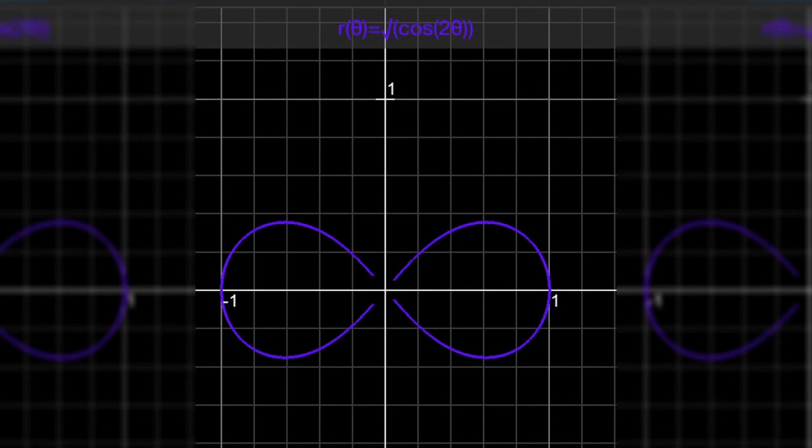r squared cosine 2 theta - it's a lemniscate. Since r is squared, we lose all of our negative r's - they become undefined. And that's why we find our four-leaf rose becomes a two-leaf rose, it's a lemniscate.